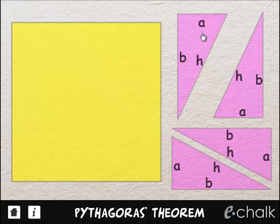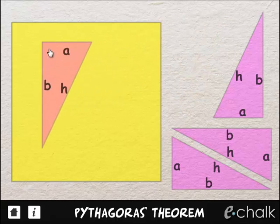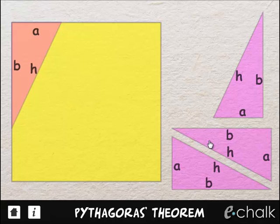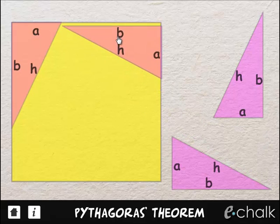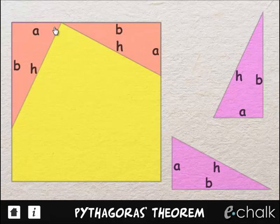And what we've got on the left-hand side is a square, and you can see that the side of the square is of length A plus B.